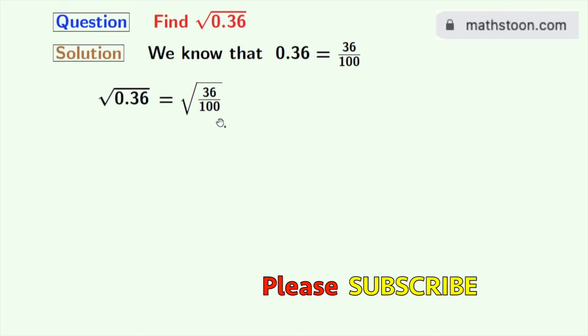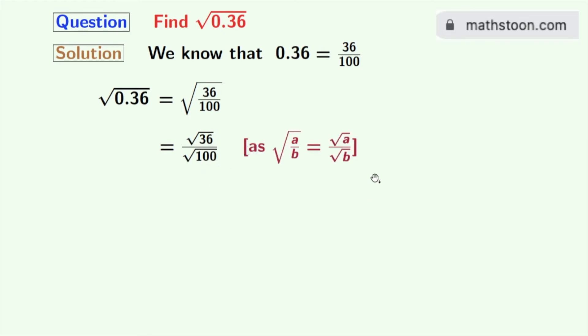Now we can rewrite this expression as root over 36 by root over 100. Here we have used the rule of root over a by b is equal to root over a by root over b.